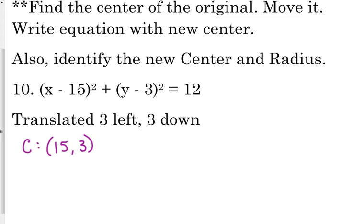Here's where you've got to make sure that you're careful about making sure that you change the signs. If we move three units left, left and right are x values. So if we are currently at x equals 15 and we move three units to the left, what is our new x coordinate going to be? 12.